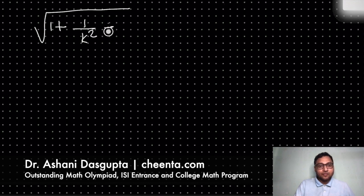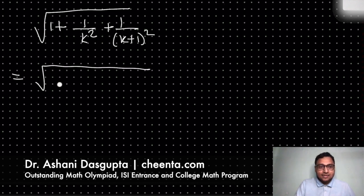How can we get rid of the square root sign? This is what we have. So one thing we could do is we could take the LCM. So this is k squared times (k+1) squared.